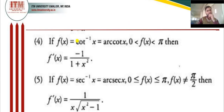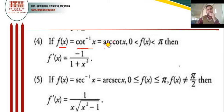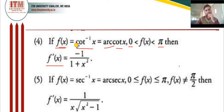Formula 4: if f(x) is equal to cot⁻¹x, also written as arc cot x. In this function the value of x varies from 0 to π. Then f'(x), the differentiation of cot⁻¹x, is minus 1 upon (1 + x²). This is also similar to tan⁻¹x — only a minus sign is placed in the numerator.